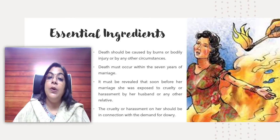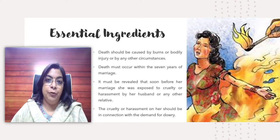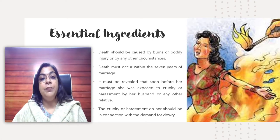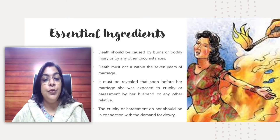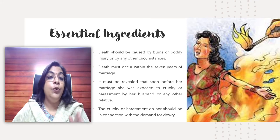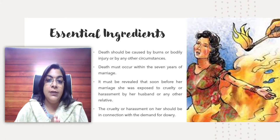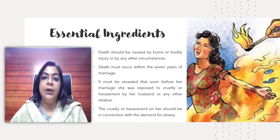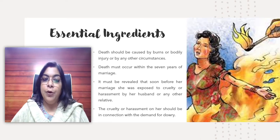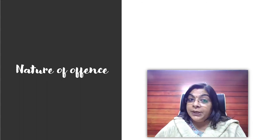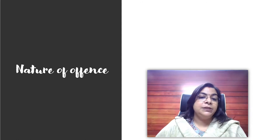Crucially, the cruelty or harassment must be in connection with a demand for dowry specifically — not any other form of cruelty. For example, if she was not given permission to do a job, that would not be considered a dowry death. There may be many forms of cruelty that cannot be connected to dowry death. The cruelty or harassment must relate to the demand of dowry only. If that connection exists, the offense falls under section 304b of IPC, and the punishment is a minimum of seven years up to life imprisonment.